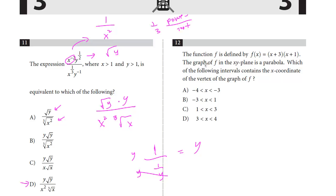Question 12. The function f(x) is defined as (x + 3) times the quantity (x + 1). The graph of f in the xy plane is a parabola. Which of the following intervals contains the coordinate of the vertex of the graph of f? This is a common question. This is a nonlinear equation. It's a parabola. How do we find the vertex? It depends on what form is given.